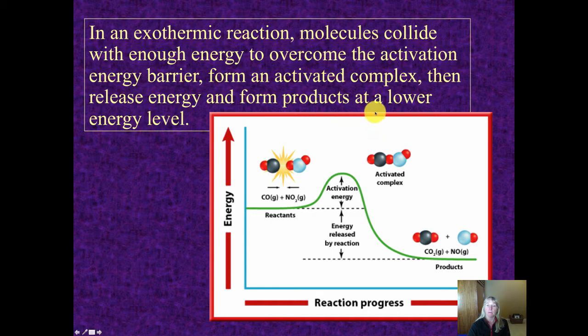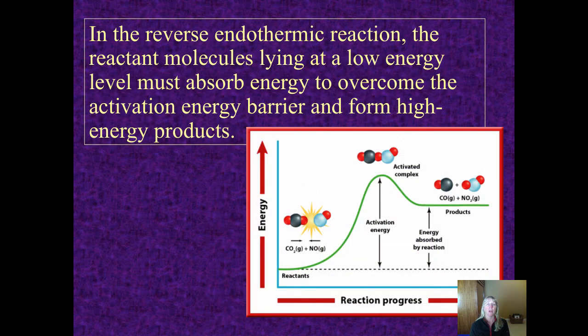At that point, that's where this guy forms, that clunky-looking activated complex. Unstable, high energy, breaks apart and forms now carbon dioxide and nitrogen monoxide. Notice that they are at a lower energy content. The only thing that could have happened here was there was a net release of energy. And, of course, that's right, you would have been looking at an exothermic reaction.